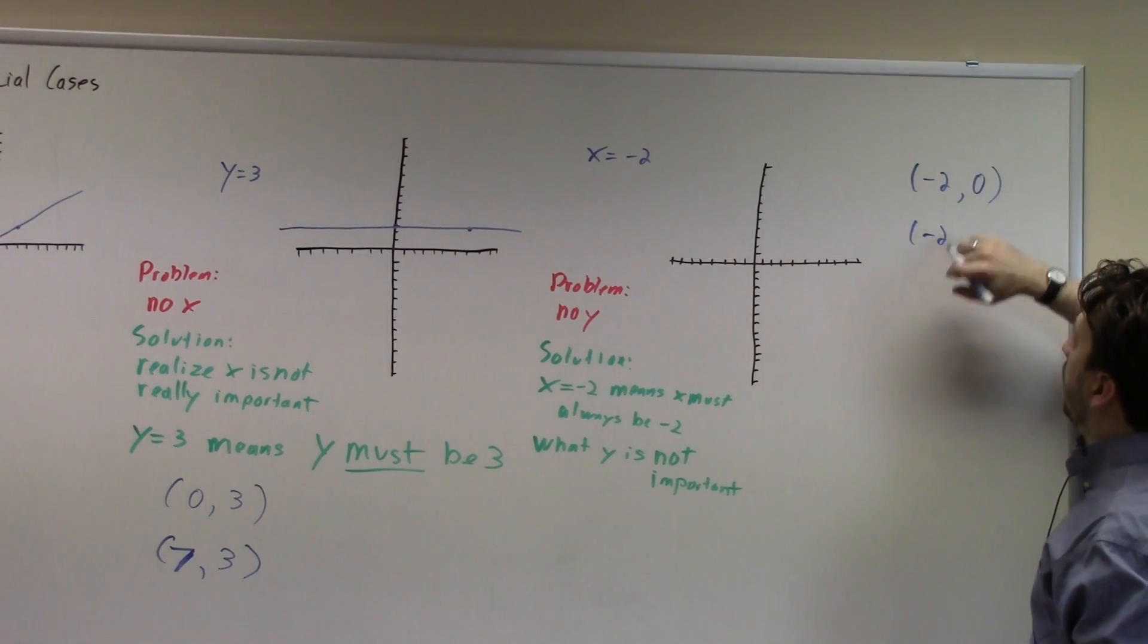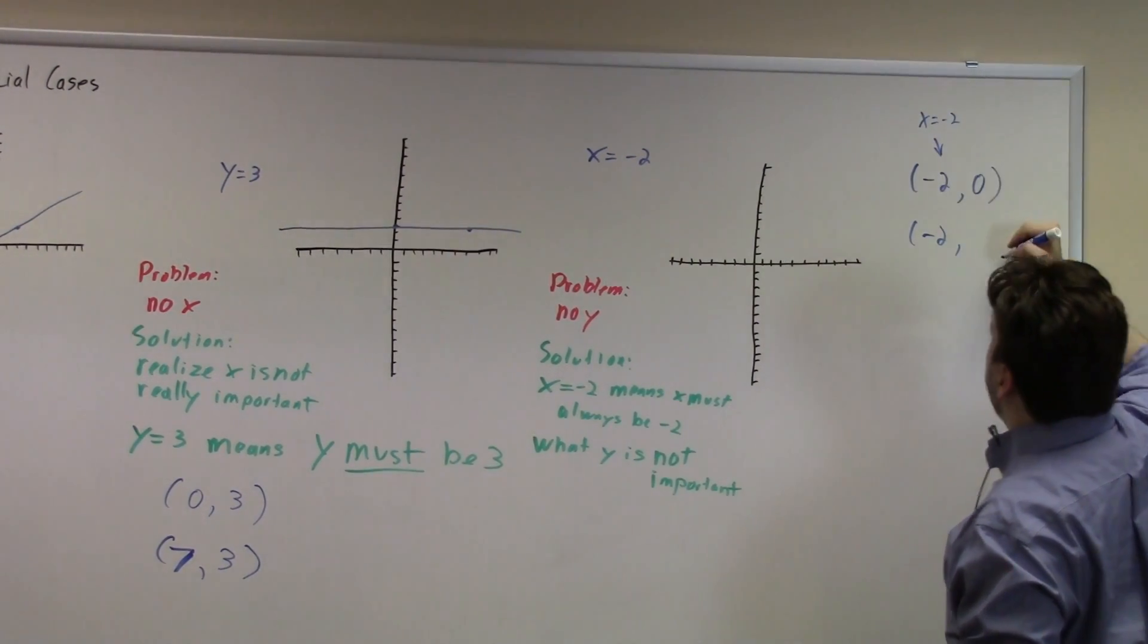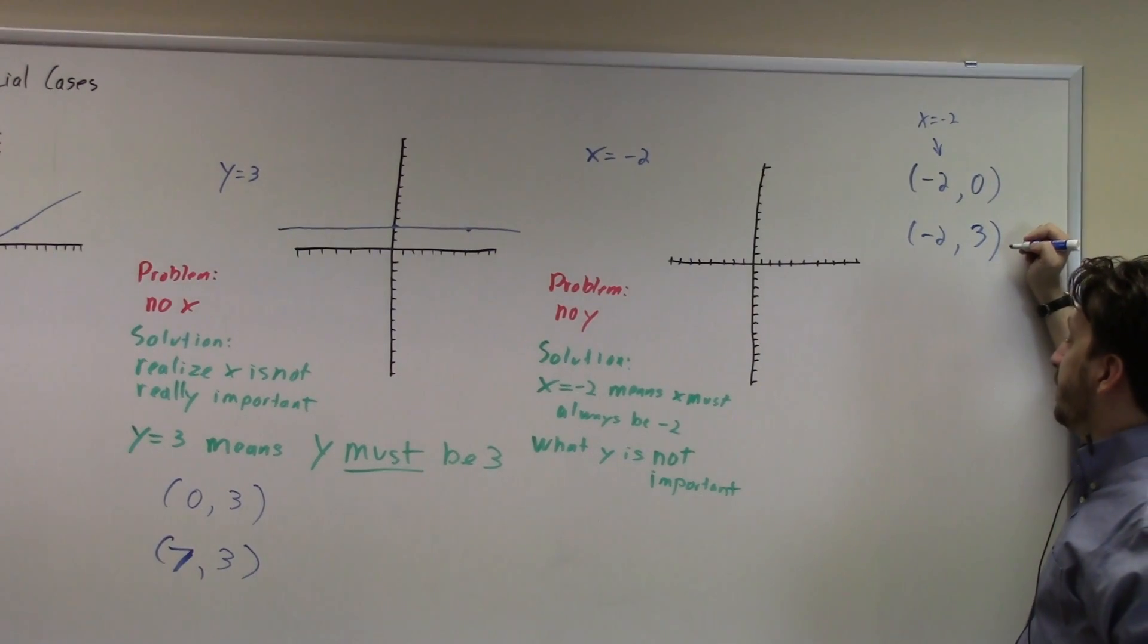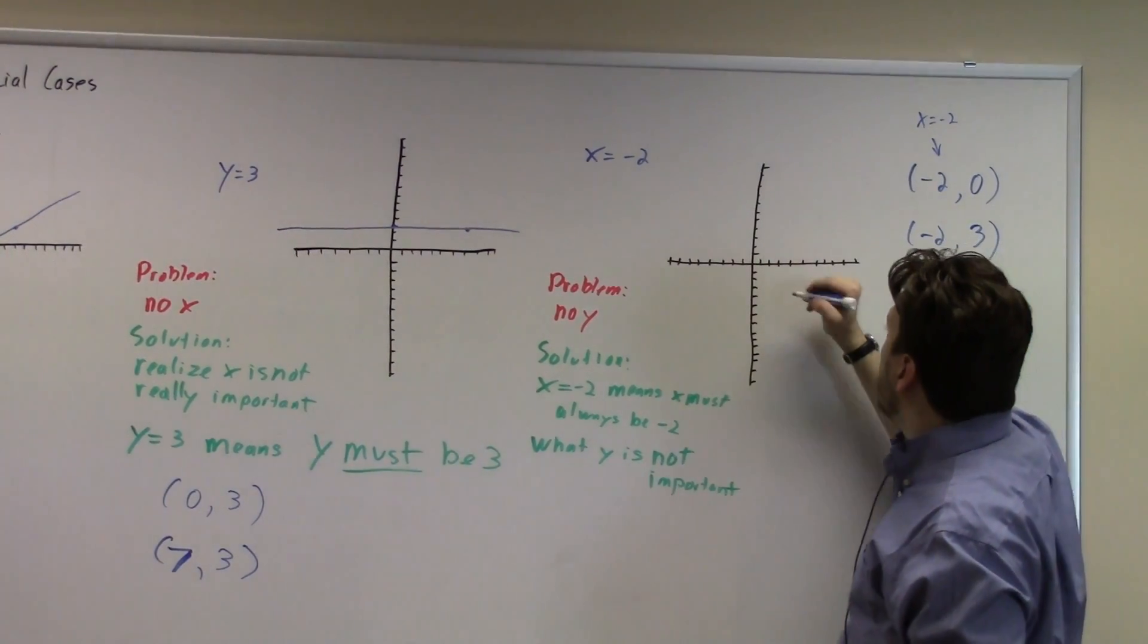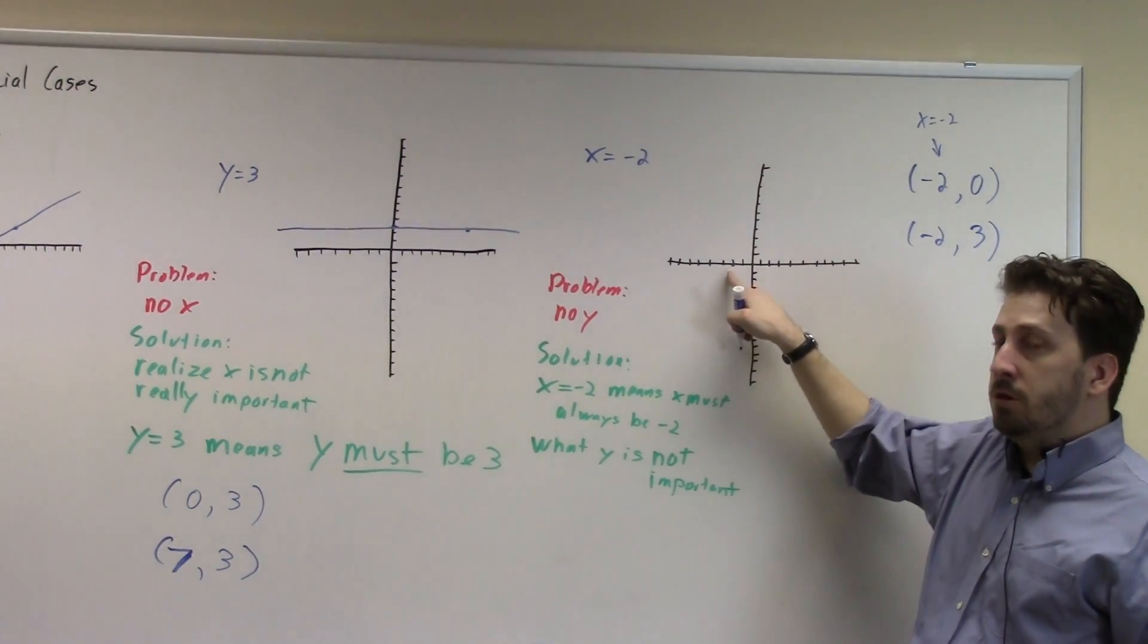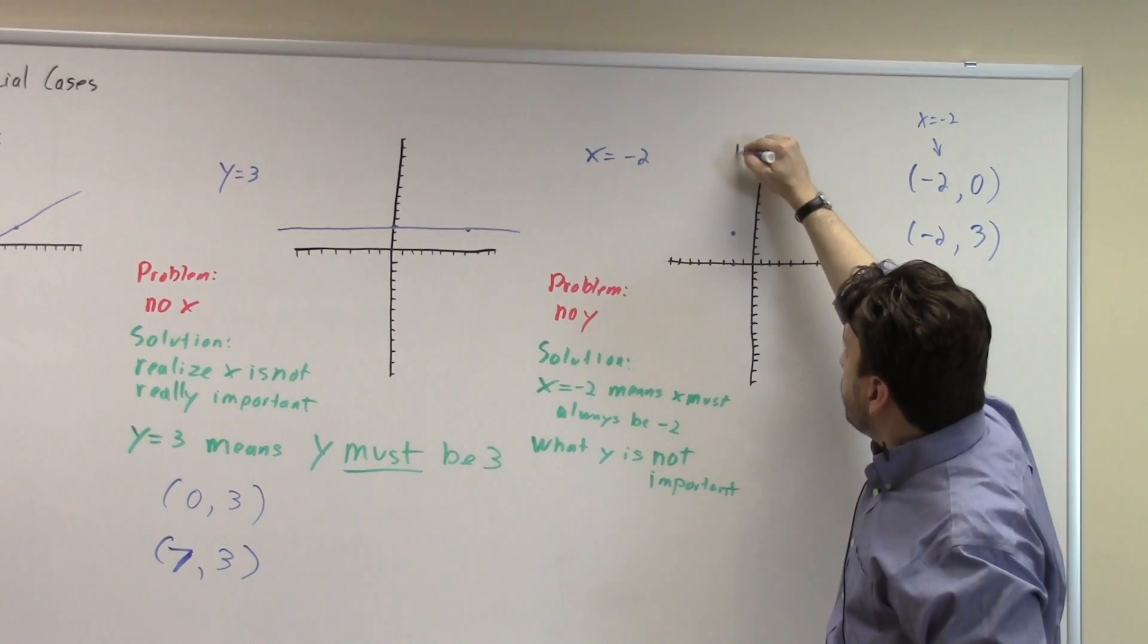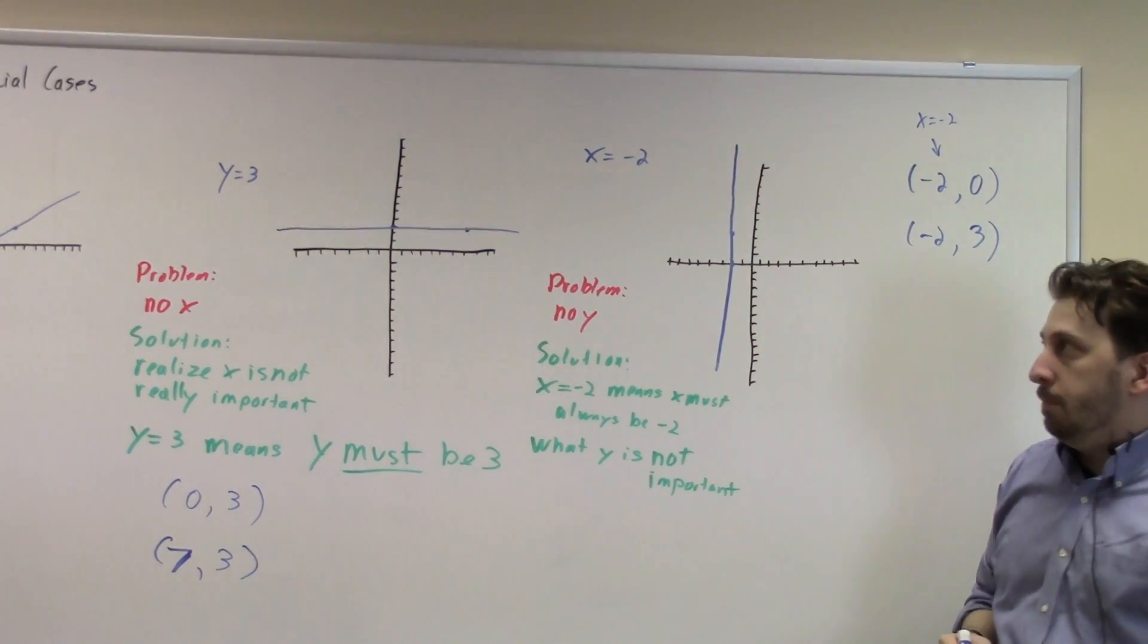Then I need another point where x is negative two. So remember here, x always has to be negative two. So just pick a number that makes you smile. I like three in this case. It makes me smile a little bit. And then we're going to graph it. So our first point was at negative two, zero. And remember, your x always comes first in your coordinate pair, so that's going to be negative two, zero. And our second point is negative two, three, which will be right there. And there's your line.